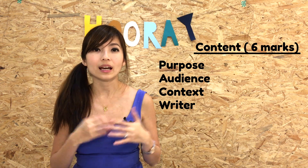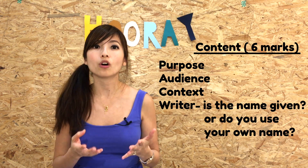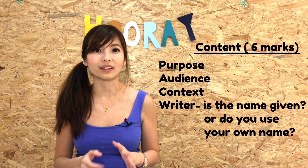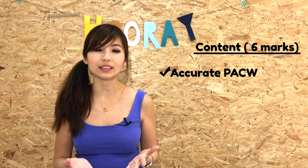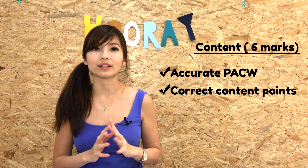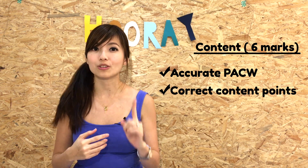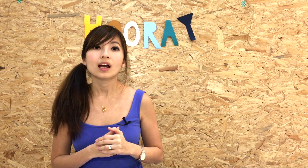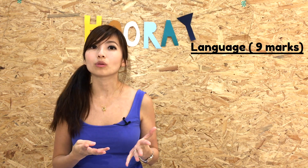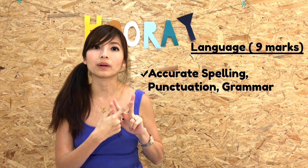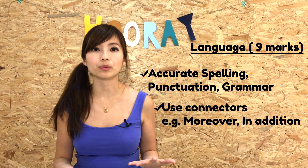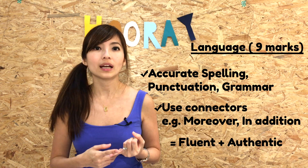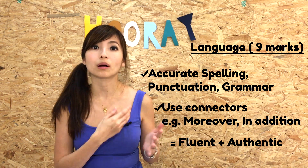Whether you are writing as someone with a given name in the question or as yourself, it's crucial that you pick that out. As long as you understand the PACW and apply it accurately, plus find the content points you are supposed to answer as stated in the question, you should be able to score the six points for content. For language, which takes up nine marks, you need to make sure your spelling, punctuation, and grammar are accurate. It will also be good to use connectors to link your points so the writing is fluent and sounds more authentic, rather than just a listing of points.